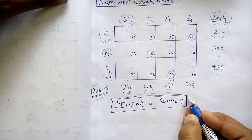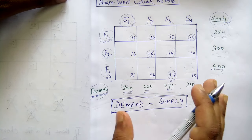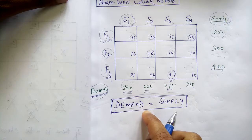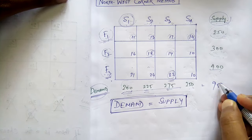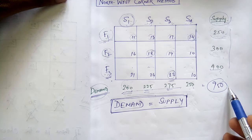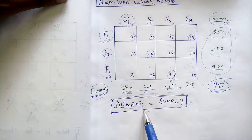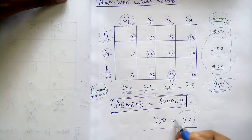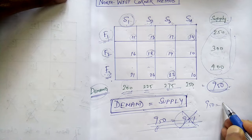We take a very strong assumption here: demand equals supply. Whatever the demand is, the supply will be exactly the same — not one more or one less. Total demand is 950, and if you add the three supply values you also get 950, so demand equals supply. In real life this may not always hold, but this assumption is taken for simplicity of the problem.